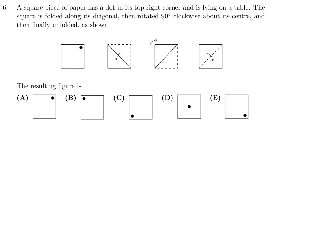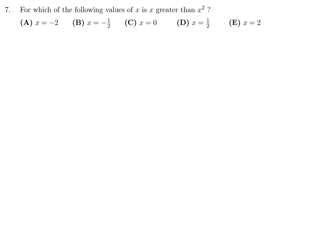A square piece of paper has a dot in its top right corner and is lying on a table. The square is folded along the diagonal, then rotated 90 degrees clockwise about its center, and then finally unfolded. If you're practicing, take out a piece of paper, cut it into a square, make a dot and follow the instructions. When you fold it the dot would be here, then you rotate it the dot goes here, and when you unfold it the dot ends up there. The answer is E for number 6.